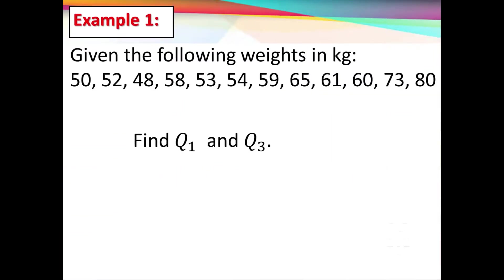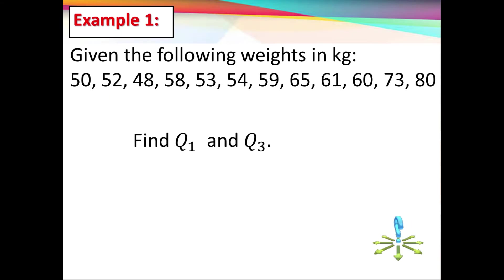Example 1: Given the following weights in kilograms — 50, 52, 48, 58, 53, 54, 59, 65, 61, 60, 73, 80 — let's find Q sub 1 and Q sub 3 using the Mendenhall and Sinscih method.